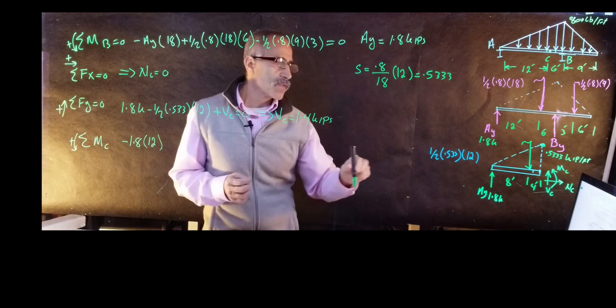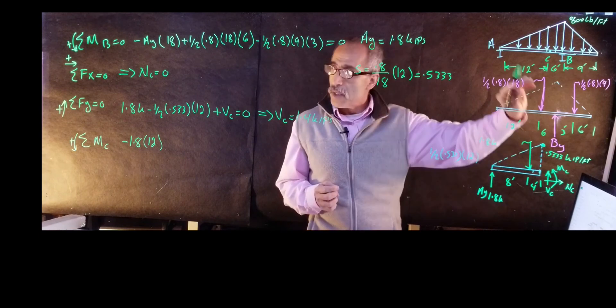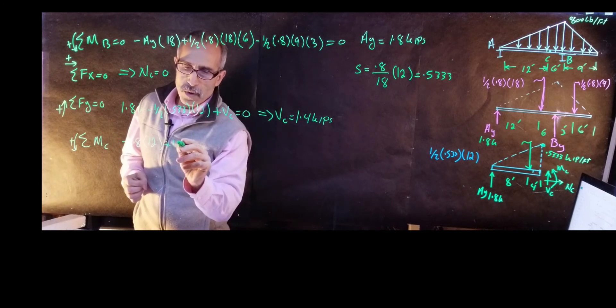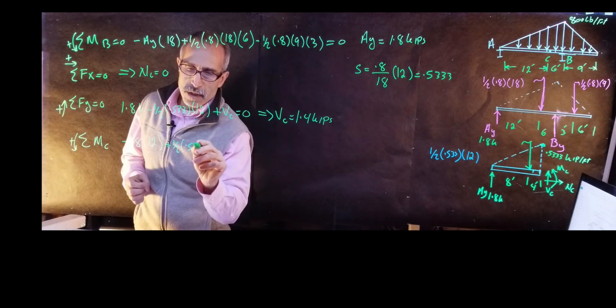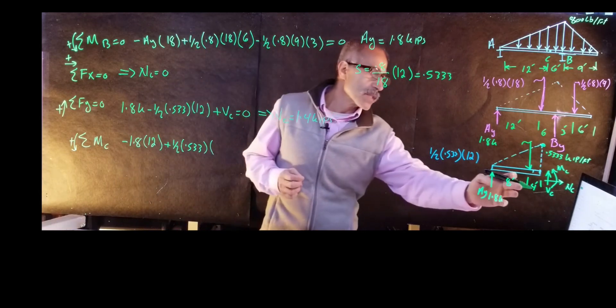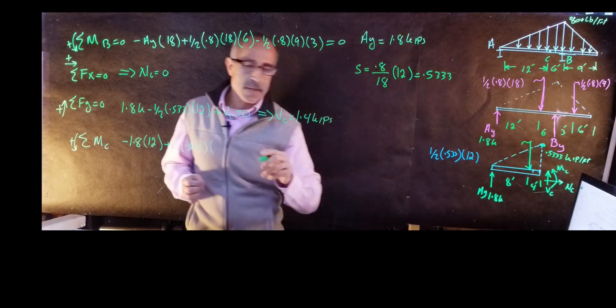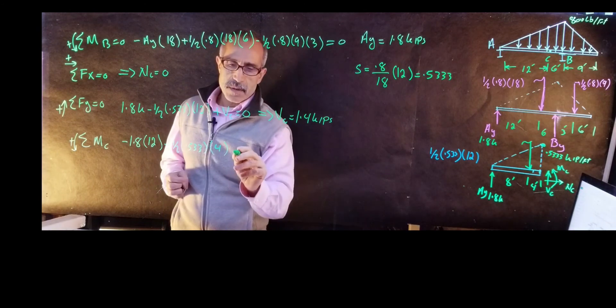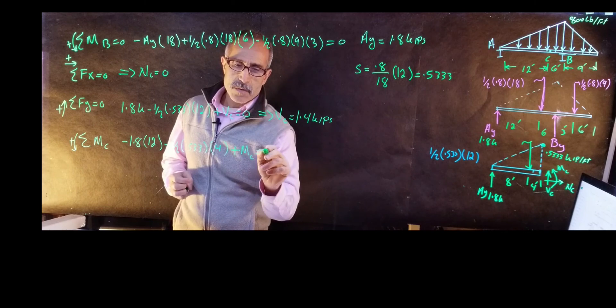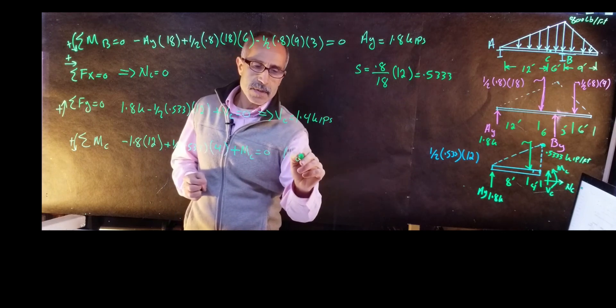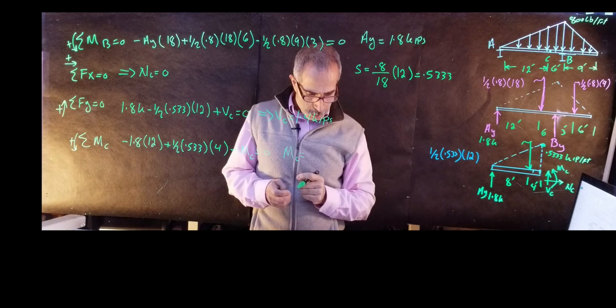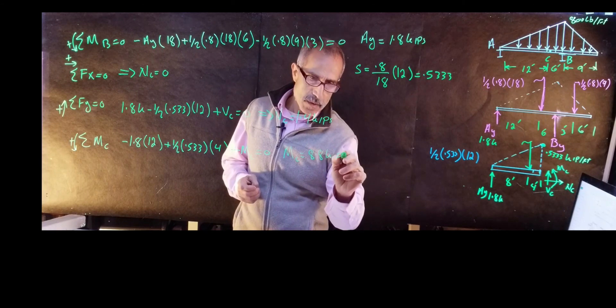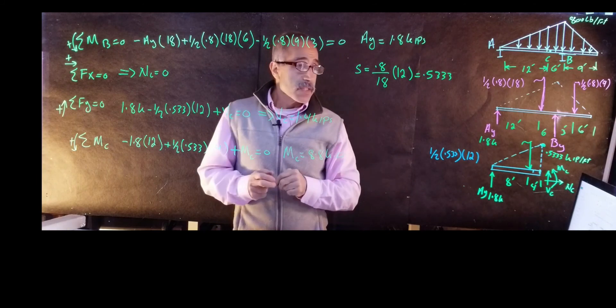And then we're going to have this force taking a moment about here, it's going to be counterclockwise, so it's going to be positive. So it's going to be plus 0.5333 times 12, and the distance is going to be 4 feet. And the next one is going to have Mc itself, which is the sign we put as positive equals 0. So our Mc comes out to 8.8 kips.